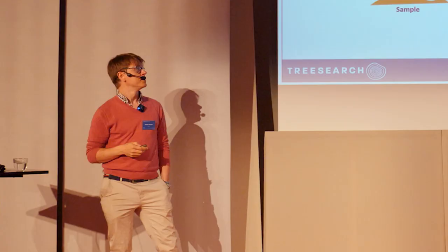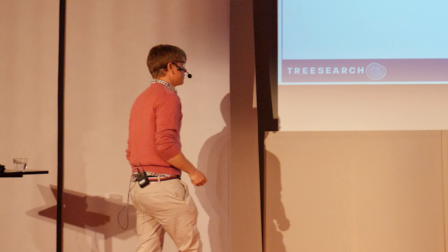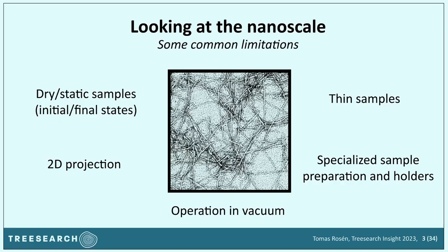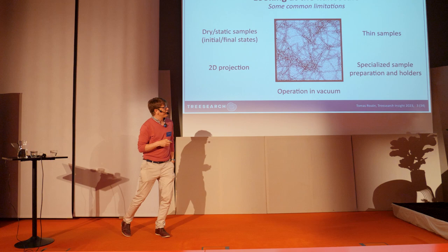But why are we interested in other techniques if we already have ways of imaging at the smallest scales? Well, as with all techniques, there are certain limitations. Often you are limited to dry, static samples, with difficulty seeing anything happen over time. It's usually restricted to 2D projections, so you may lose three-dimensional information. There are also operational constraints: very thin samples, specialized sample preparation, and operation in vacuum, which limits what you can really look at.